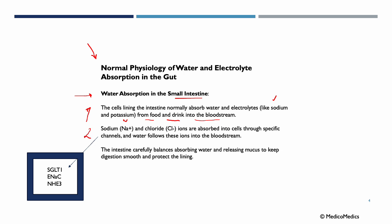Furthermore, sodium and chloride ions are absorbed into our cells through specific channels, and water then follows these ions into the bloodstream. There are many important channels and transporters involved in sodium and chloride absorption in the small intestine, and it is recommended to know at least two or three of them.